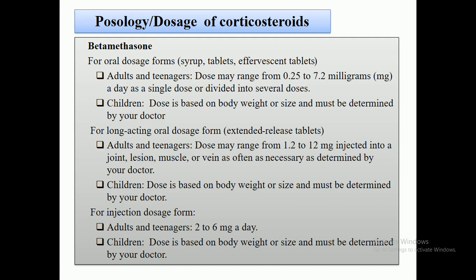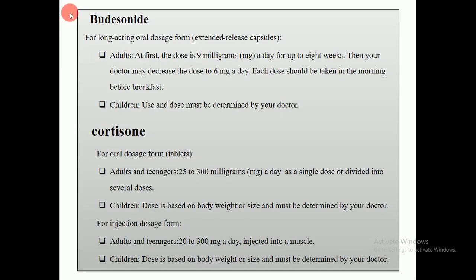For injection dosage forms for adults and teenagers, 2 to 6 mg per day should be given. Teenagers are those whose age is from 13 to 19 years. For children, the dose is based on body weight or size and must be determined by medical practitioners.